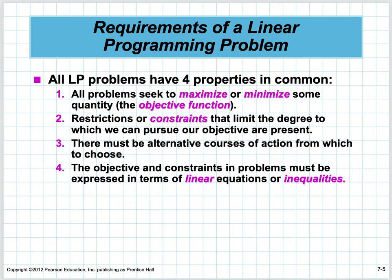All linear programs have four properties in common: either maximizing or minimizing one thing, called an objective function. In this course, we're trying to either maximize profit, maximize revenue, or minimize cost. You could also minimize time or maximize resources. There are restrictions called constraints that limit the degree to which we can pursue our objective.